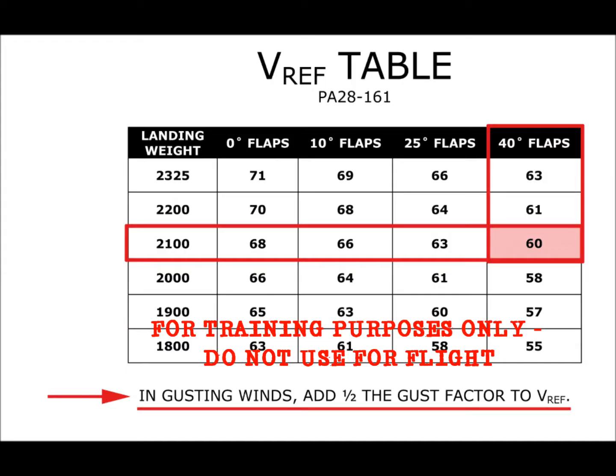An aircraft's approach speed, or VREF, usually equates to 1.3 times the stall speed in the landing configuration. Because VREF gives the pilot a fixed margin of protection over the stall — in this case 30% — operating the airplane at a lower indicated airspeed would reduce that margin and bring the aircraft closer to the stall.